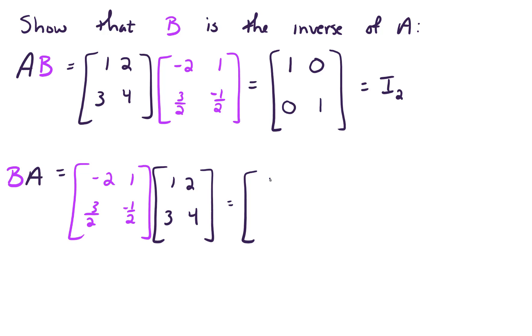And again, if you multiply through and work it out, you will get the 2 by 2 identity matrix. And since A times B equals B times A, which equals the 2 by 2 identity matrix, we can say that B is the inverse of A.